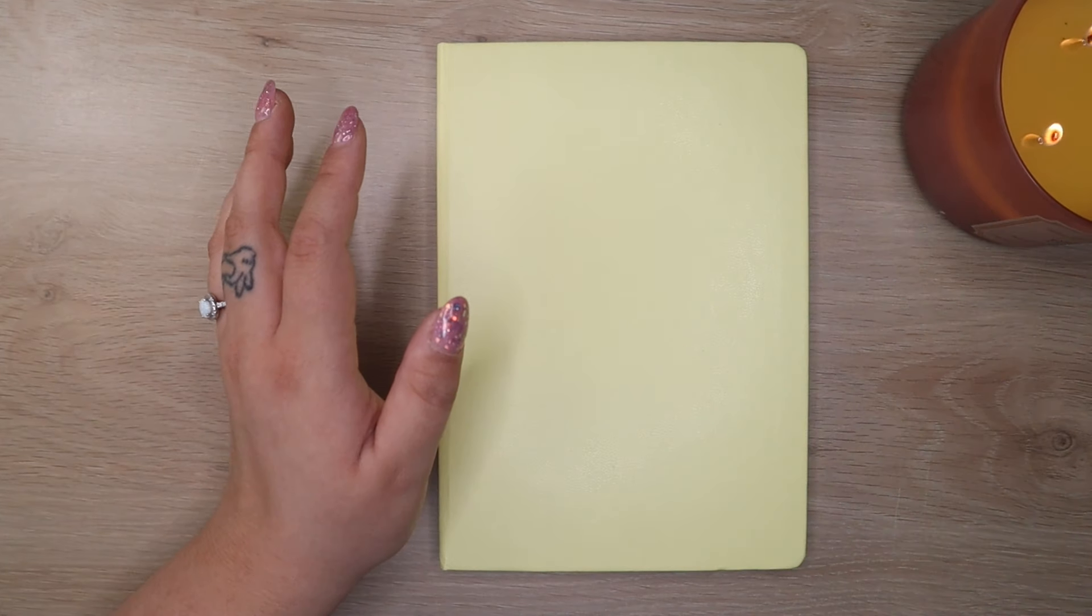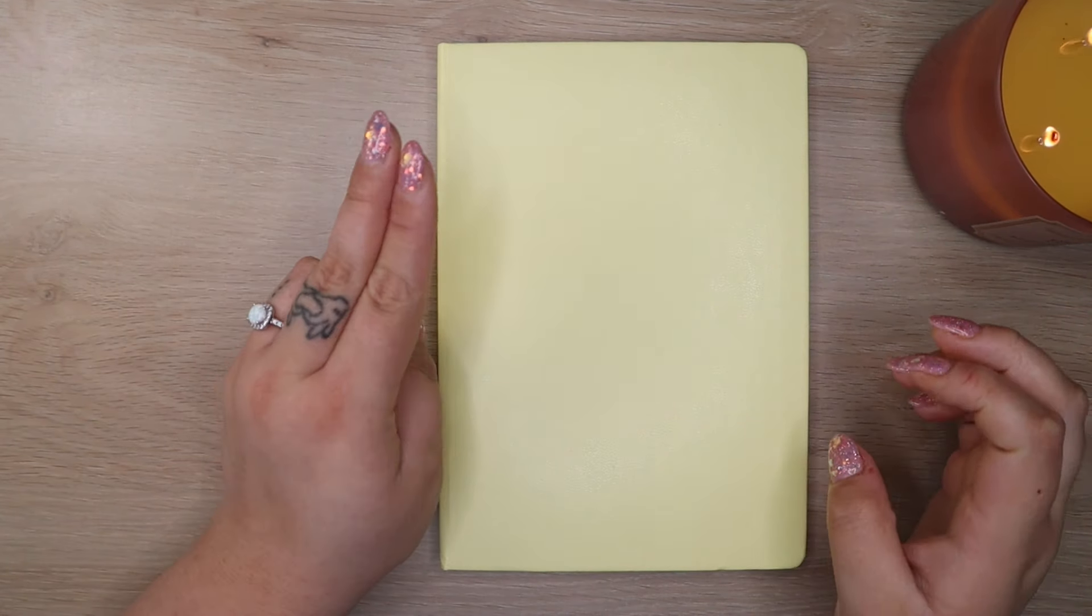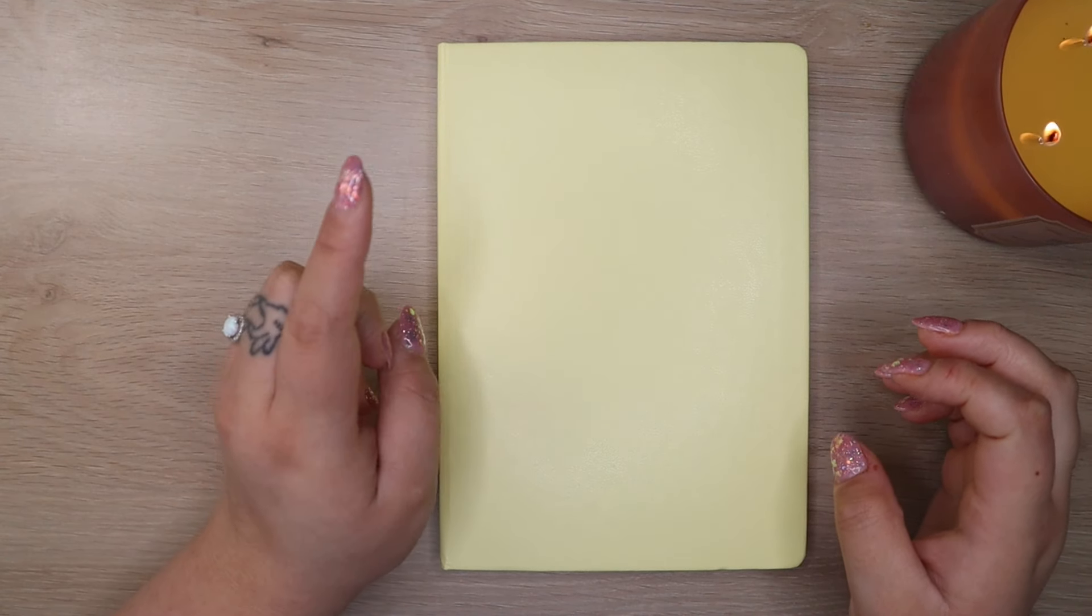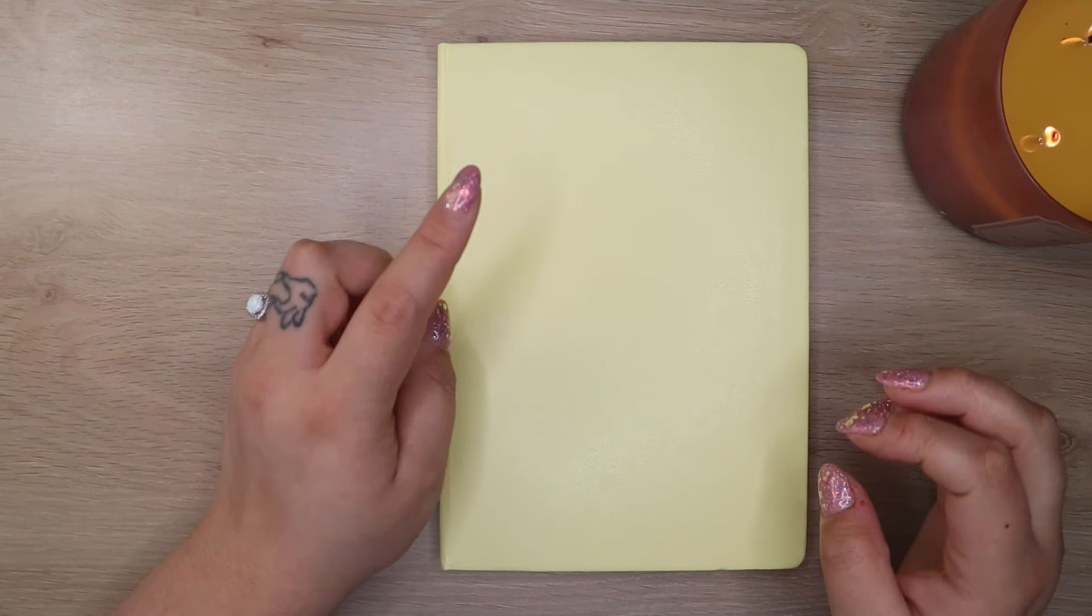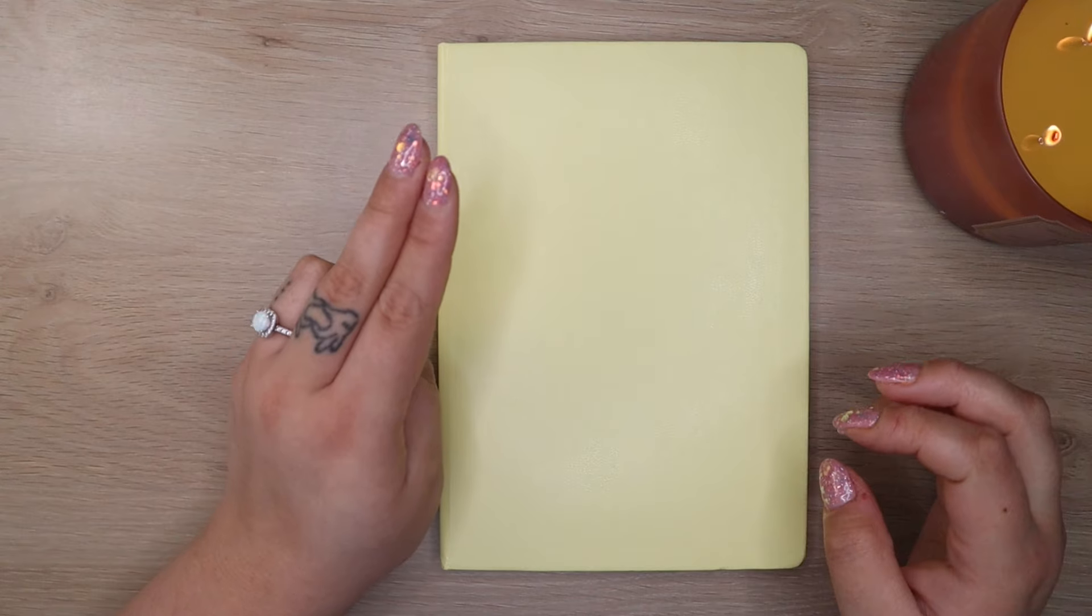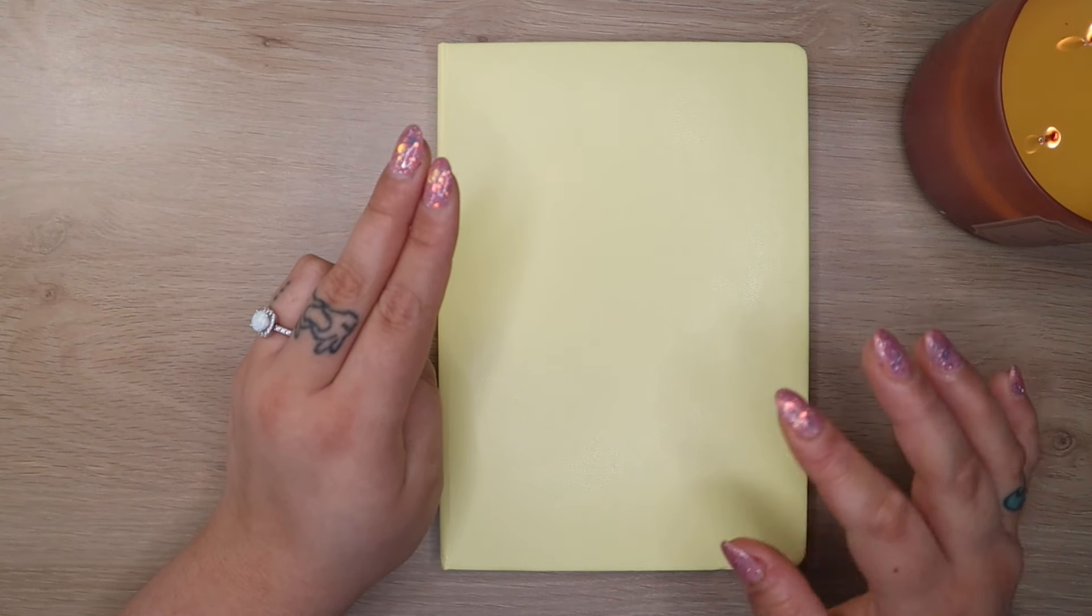So I moved into a two book combo with a Hobonichi Weeks for daily tasks and to-dos and a Hobonichi Techo A6 for journaling.